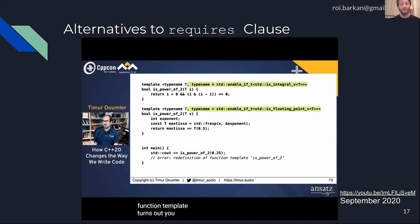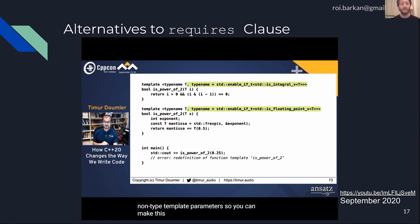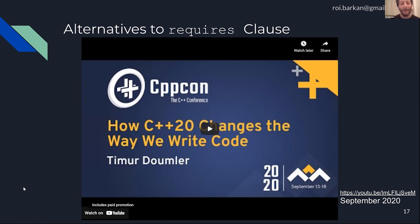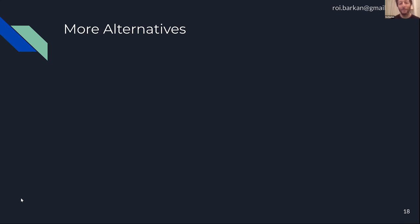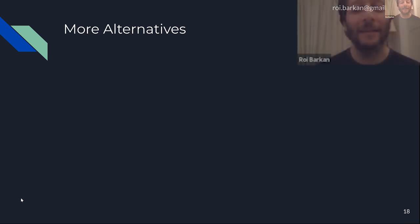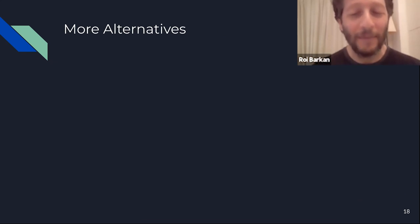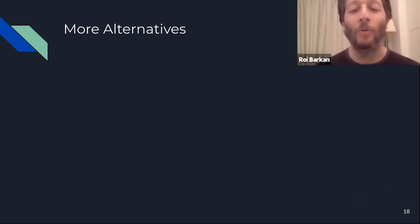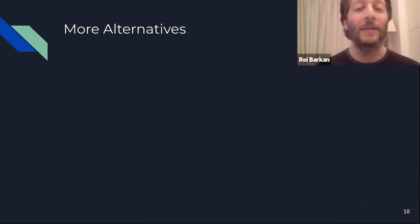'You can work around that because that rule doesn't apply to non-type template parameters, so you can make it an int template parameter.' That clip was meant to remind us that things were possible before C++20, but very, very complicated. Timur tried to create two alternatives for the same function — one for floating point and one for integral — and showed how complex things were.